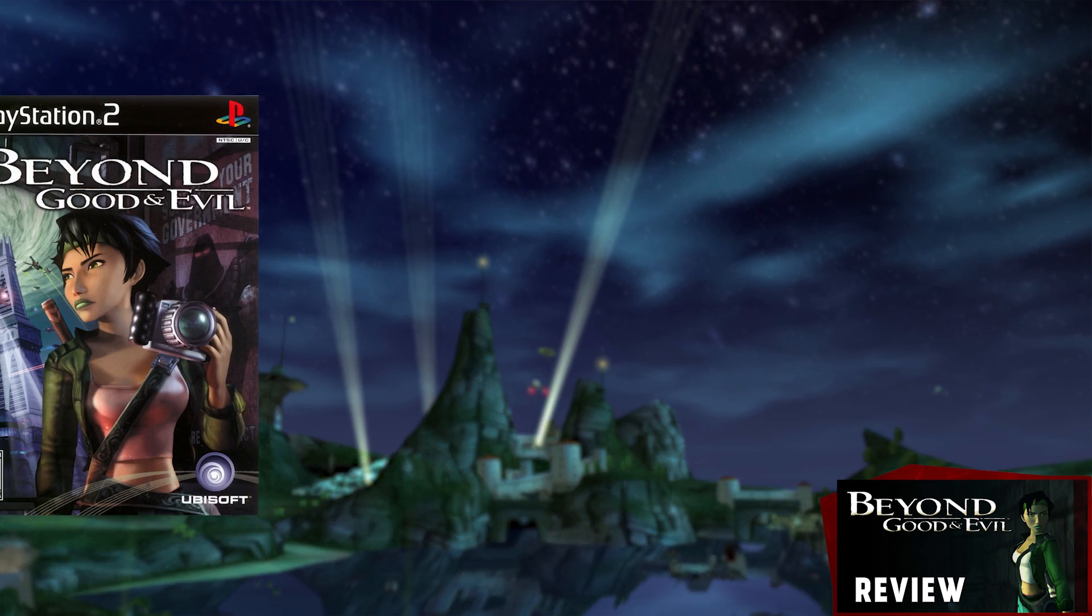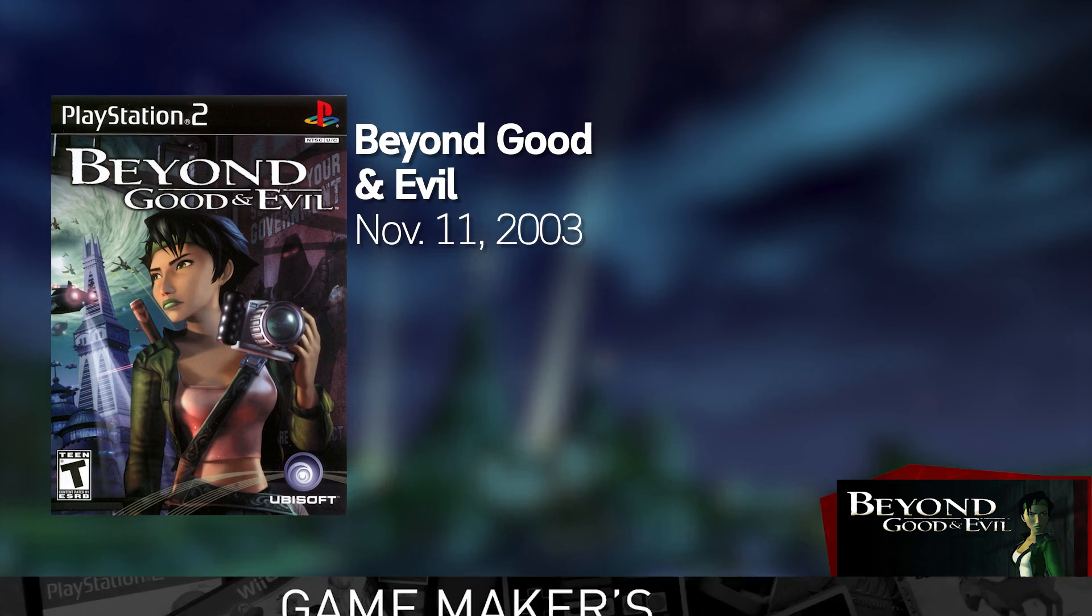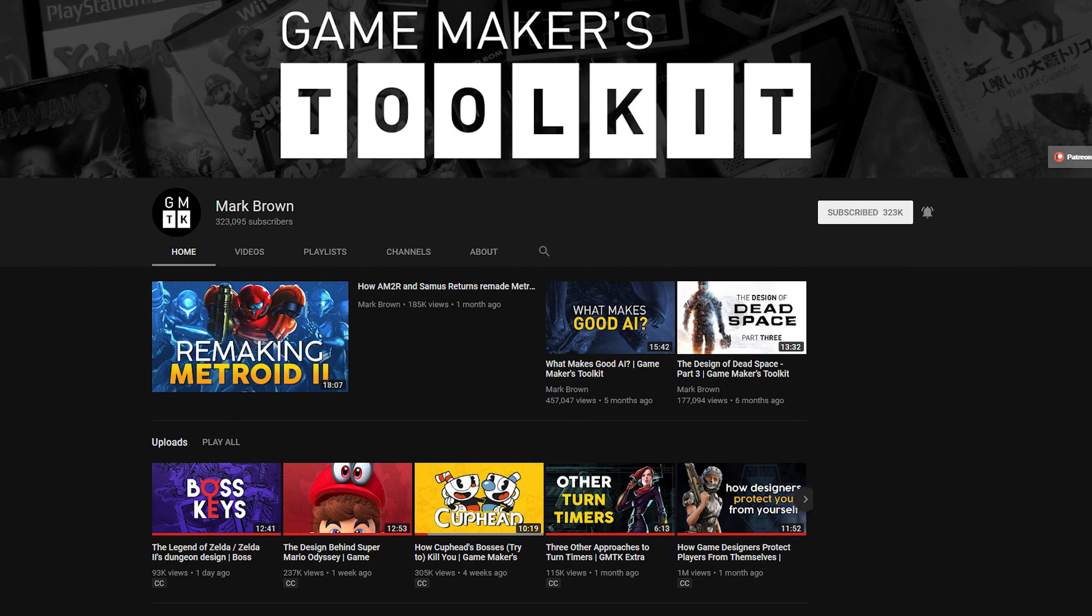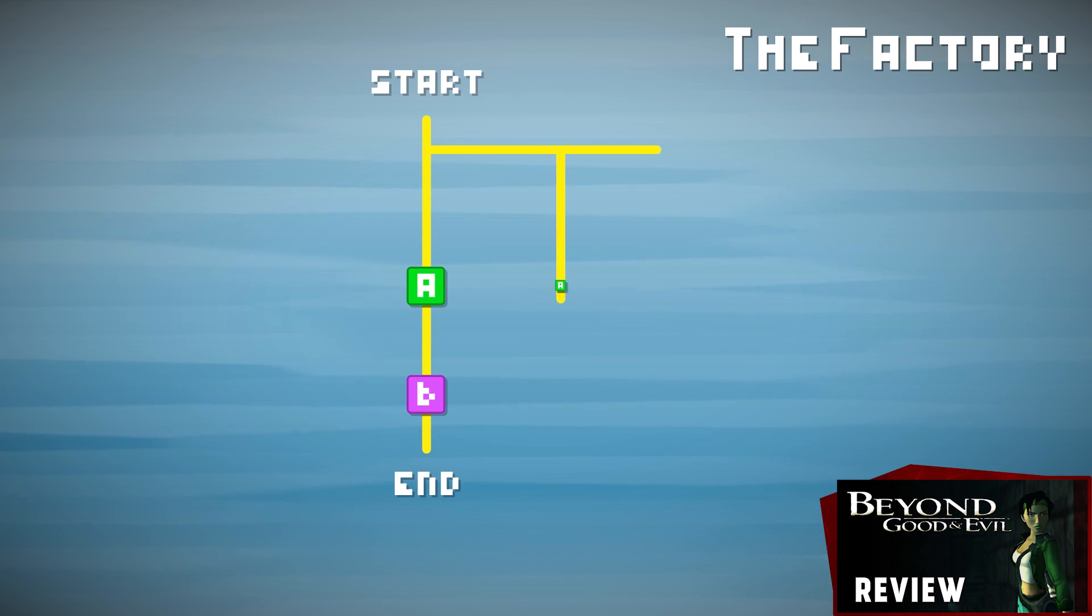Alright, if you watched my previous video on Beyond Good and Evil, you'll know that I tried taking Mark Brown's Game Makers Toolkit level design maps and applied them to the game to try to better understand its level design. As a tool, they are excellent and it'd be great to apply them to Hollow Knight as well.